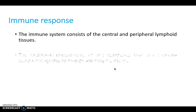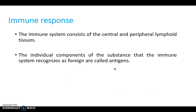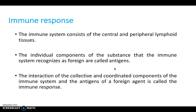The immune system consists of the central and peripheral lymphoid tissues. The individual components that the immune system recognizes as foreign are called antigens — anything in our system that isn't normal, that isn't self, is foreign. The interaction of the collective and coordinated components of the immune system with the antigens of a foreign agent is called the immune response.